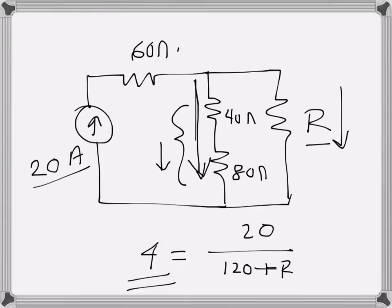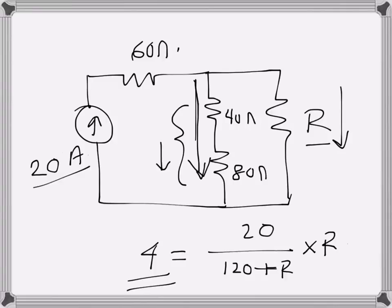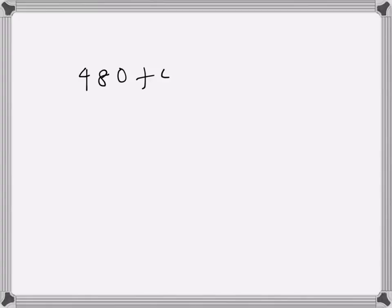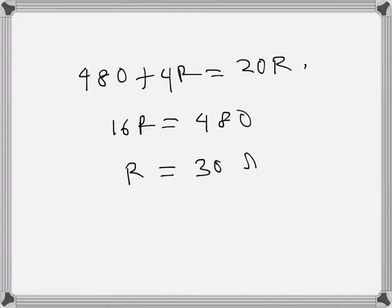So this one becomes 480, I am just multiplying both sides by this one. So 480 plus 4R is equal to 20R here. So that is 16R is 480, or R is 30 ohms.